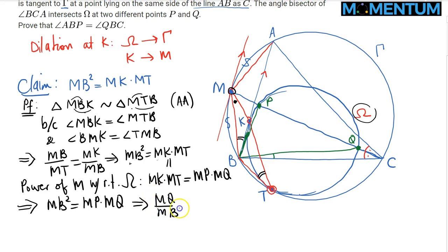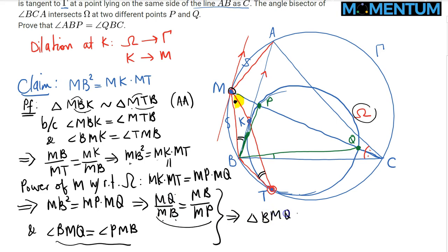This would suggest, combining it with angle BMQ being equal to angle PMB (because they are the same angles), that triangle BMQ is similar to triangle PMB by side-angle-side similarity.